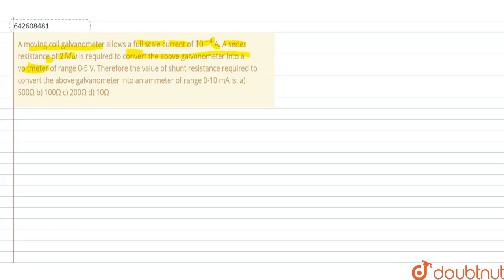a voltmeter of range 0 to 5 volt. Therefore, the value of shunt resistance required to convert the galvanometer into an ammeter of range 0 to 10 milliampere. So we need to find out the value of shunt.